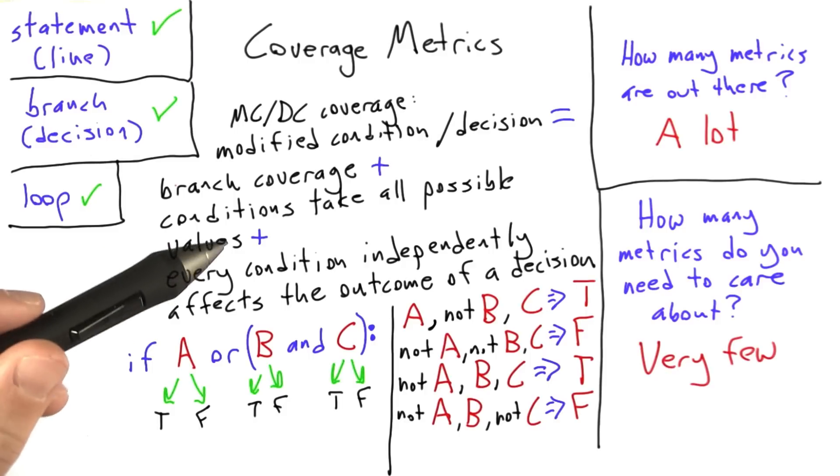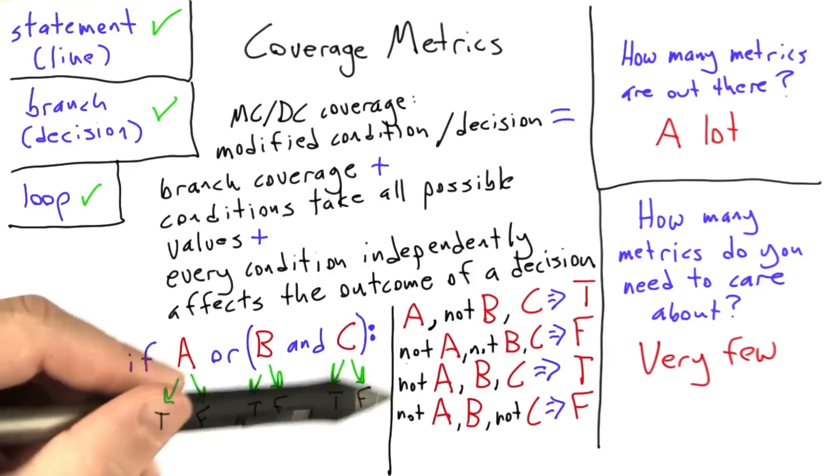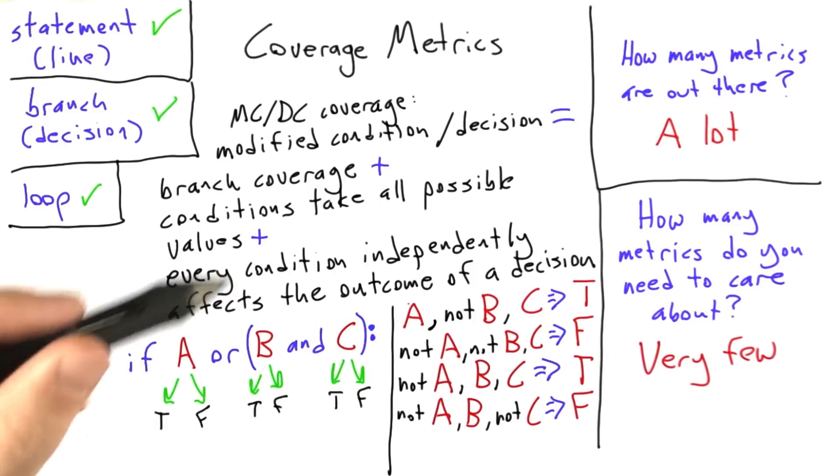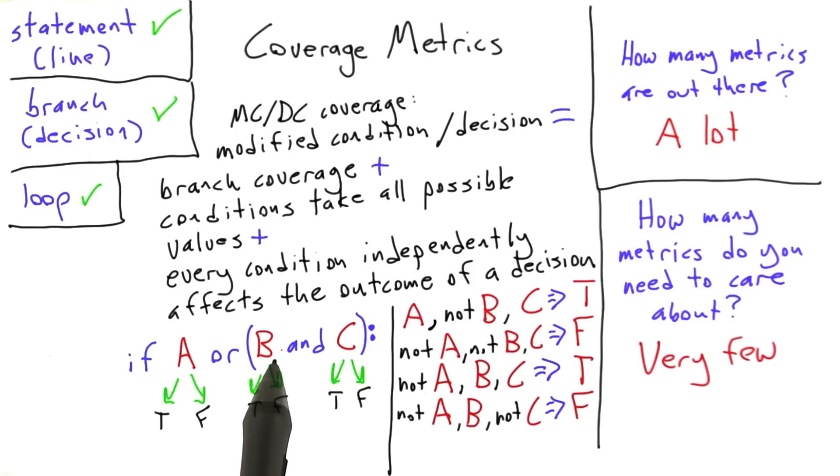And so what I believe we have here is a minimal, or if not minimal, at least fairly small set of test cases that together gets 100% MCDC coverage for this particular conditional statement in Python. And you can see here that this isn't a particularly complicated conditional. We could have written one much more complicated, and if we had, we probably would have had a fairly hard time reasoning this stuff out by hand, and what we would have needed to do in that case is probably draw out a full truth table.